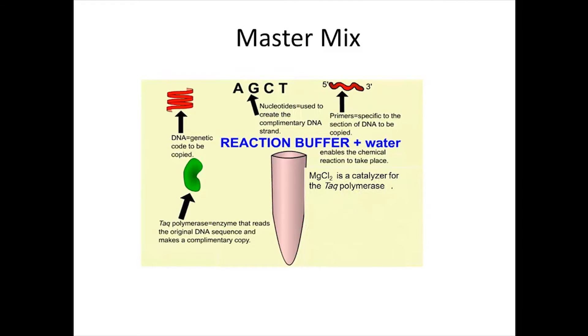The master mix is the solution where the replication of the original sample takes place. It must contain the original double-stranded DNA sample to be replicated, a particular type of DNA polymerase called TAQ polymerase which can resist high temperatures, a great amount of artificially synthesized primers (one type for each strand), a great amount of the four types of nucleotides needed to extend primers, a reaction buffer, magnesium chloride and water.